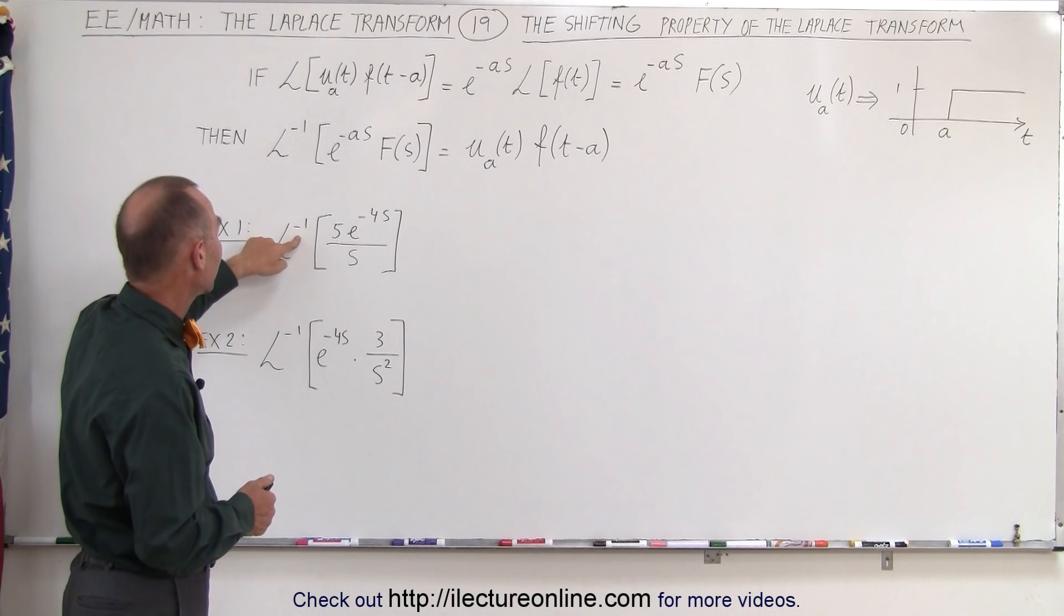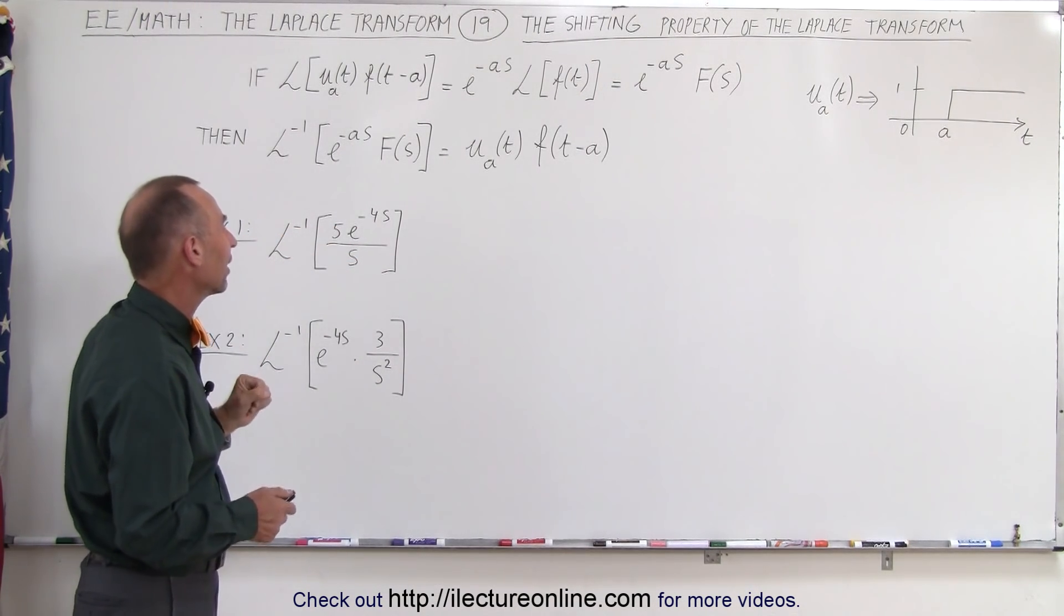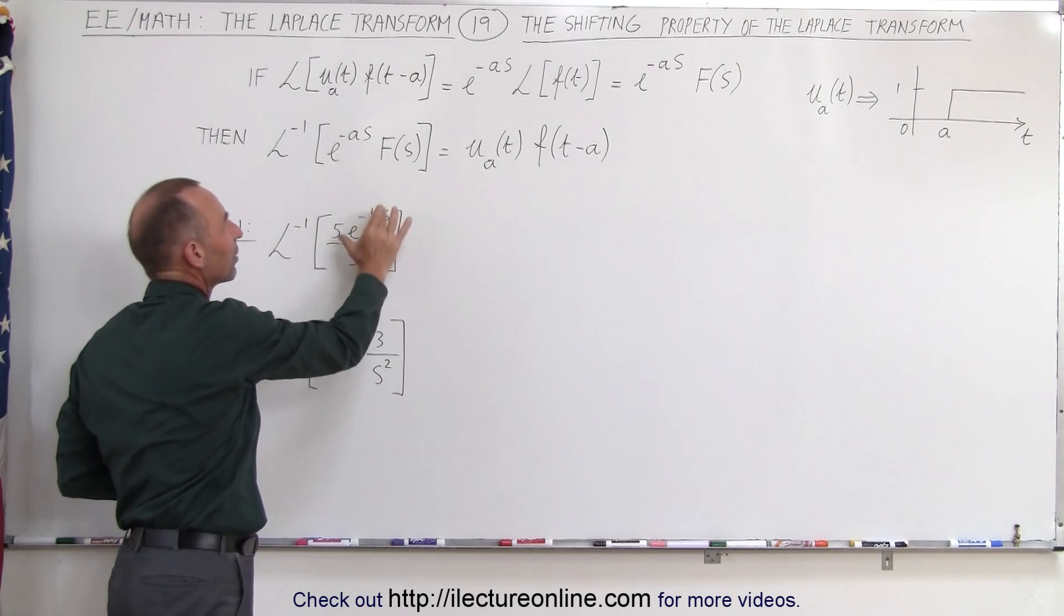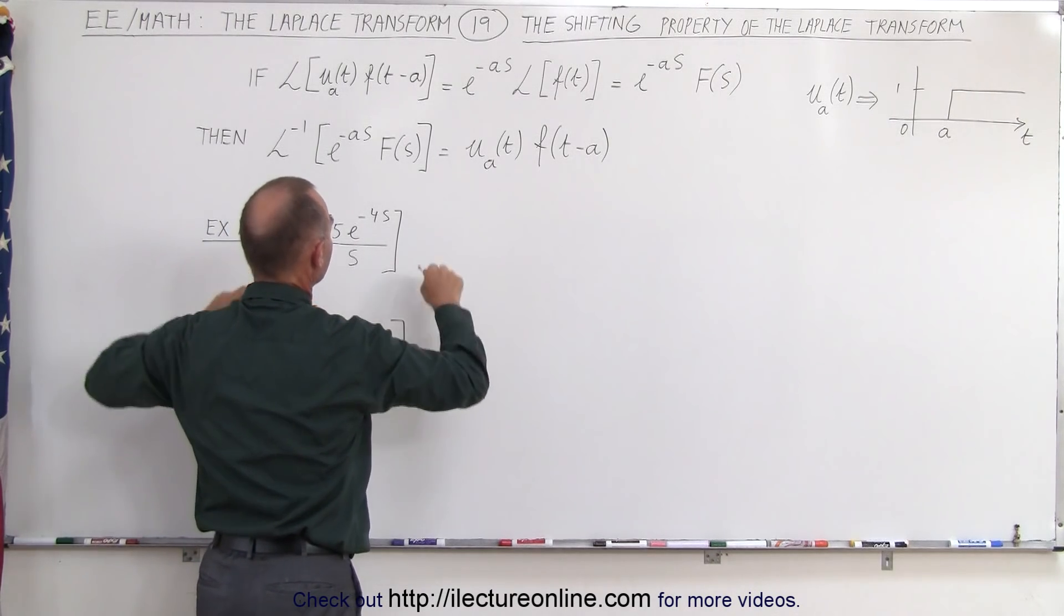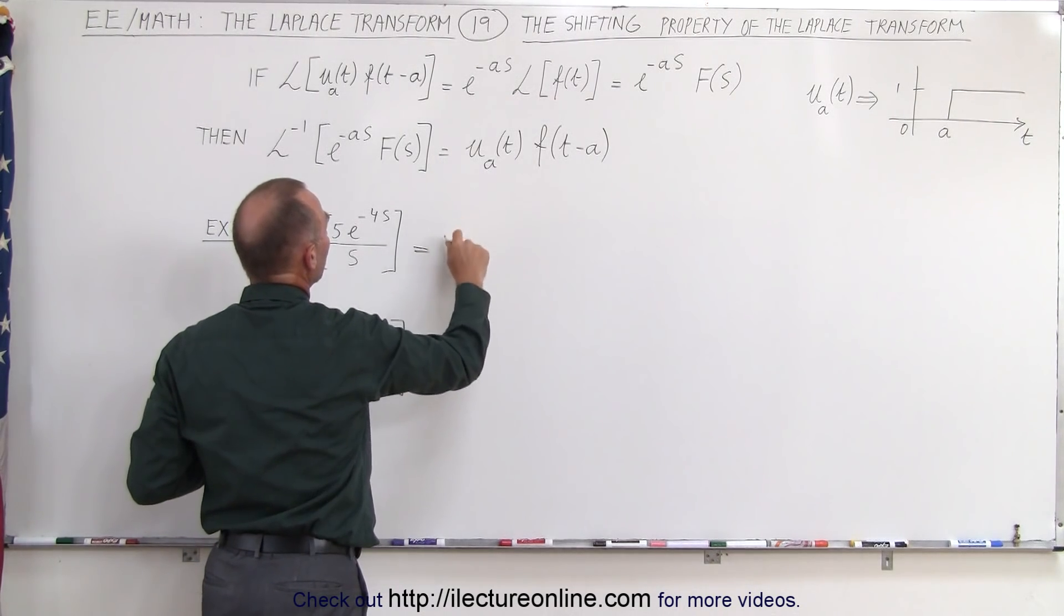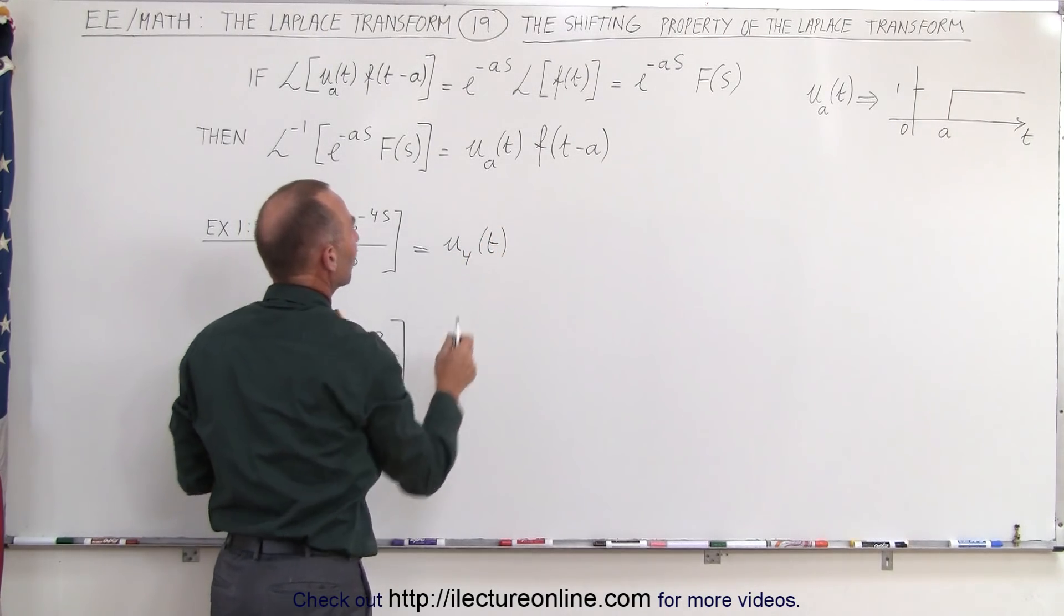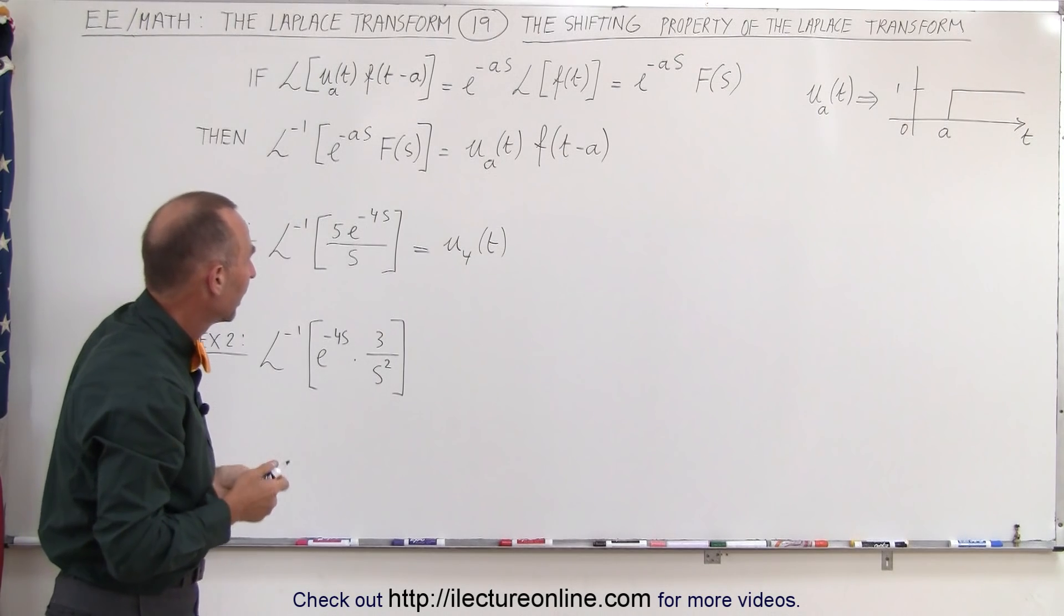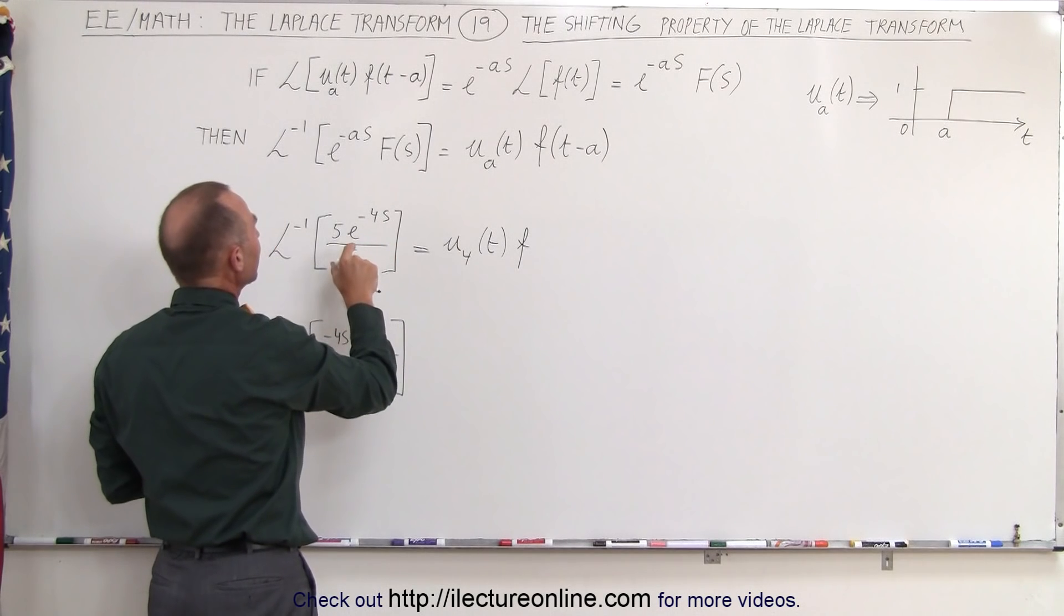Here we're taking the inverse transform of 5e to the minus 4s divided by s. The e to the minus as, this portion right here, simply means that we're going to now multiply this times u sub 4 of t. In other words, it's the step function that's been delayed by 4 seconds, and that would be times the function of what's remaining.